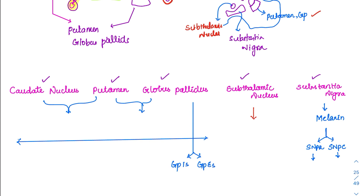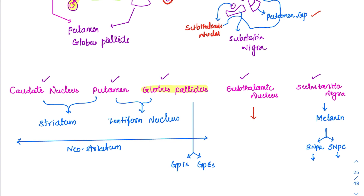The caudate nucleus and putamen are closely associated and together called the striatum. Putamen and globus pallidus together look like a lens, so they are called the lentiform nucleus. Caudate, putamen, and globus pallidus together are called the neostriatum. The globus pallidus is further divided into globus pallidus internal segment (GPi) and globus pallidus external segment (GPe).